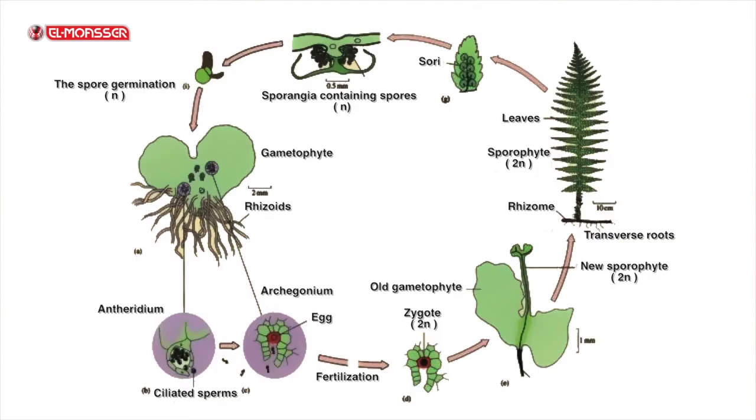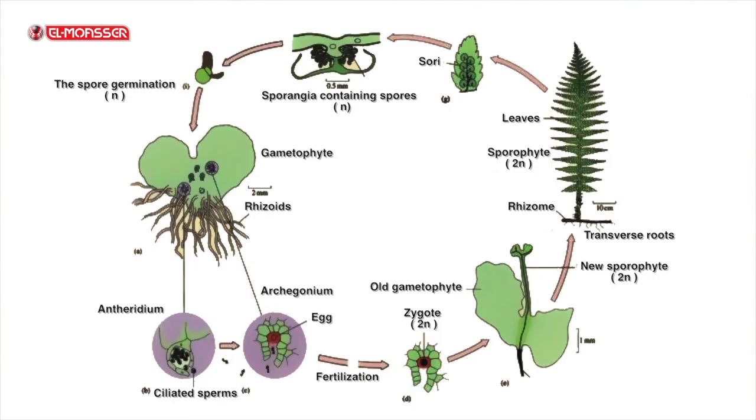The life cycle of Polypodium is considered a typical example for the phenomenon of alternation of generations, where there is a diploid sporophyte phase (2n) that reproduces asexually by spores and alternates with a haploid gametophyte phase (n) that reproduces sexually by gametes.